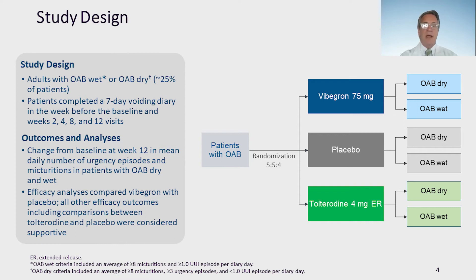The study design was taken from the 12-week trial. Adults with OAB wet, approximately 75% of the group, or OAB dry, 25% of the group, were included. Patients completed a seven-day diary in the week before at baseline and at weeks 2, 4, 8, and 12.